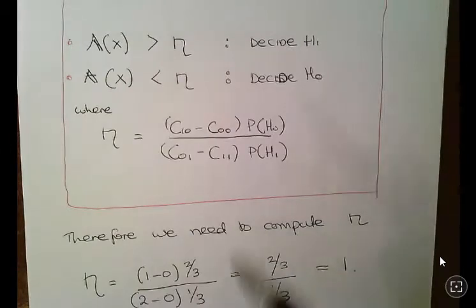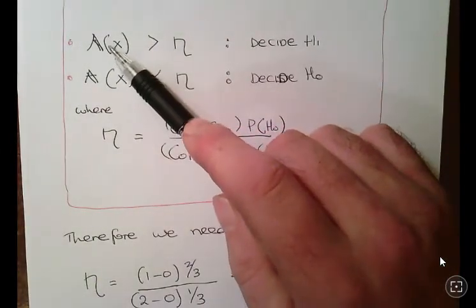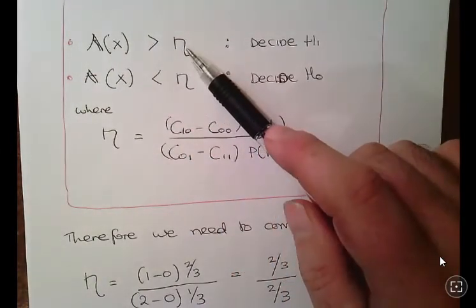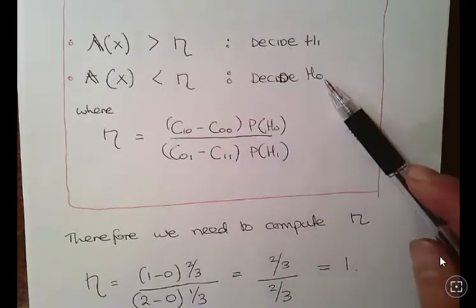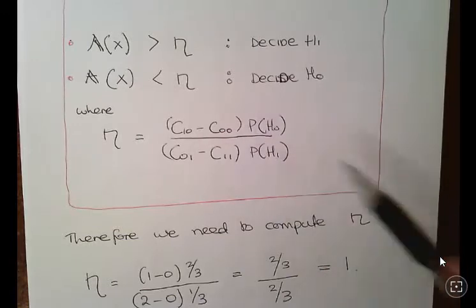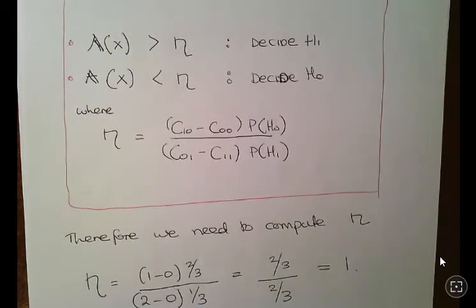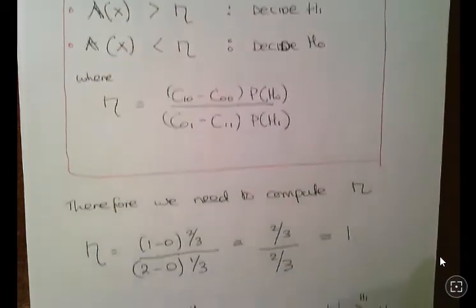So if the lambda function is greater than the threshold, we decide H1, and if it's less than the threshold we decide H0. And that is the threshold function there which we just compute now.